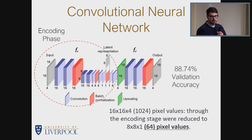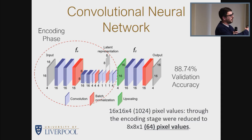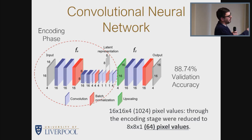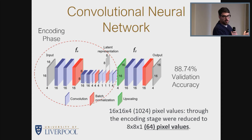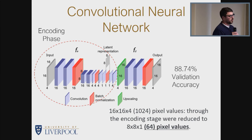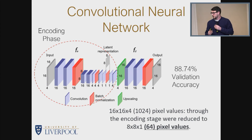We apply convolutional neural networks to the data. Convolutional neural networks essentially encode characteristics from the data and then aim to rebuild those in a decoding phase. In this project we were only interested in the encoding phase — taking the original data and reducing its dimensions — and we end up with all of those bands of data reduced into 64 separate values. So for each postcode we have 64 values extracted using the convolutional neural networks.